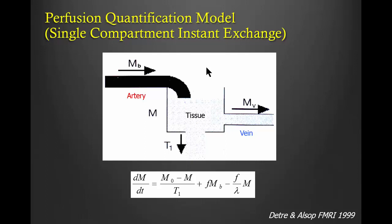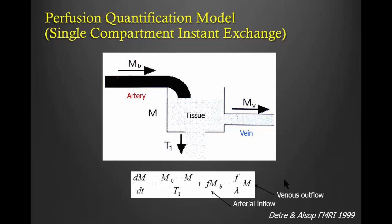For quantification, during the early days—generally in the 1990s—people used a single compartment model assuming instantaneous exchange of water. This is nicely illustrated in a plot from a book chapter by Buxton. The labeled blood goes into the artery and is instantaneously exchanged with tissue—it can be called a sink model. The majority of the effect relaxes with T1, and a small proportion drains out through the veins. This is described by a modified Bloch equation with a term for arterial inflow minus a term for venous outflow, where lambda is the blood-brain partition coefficient.